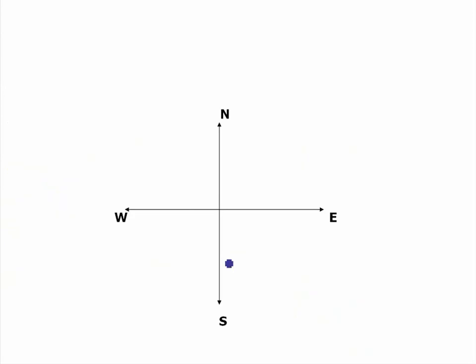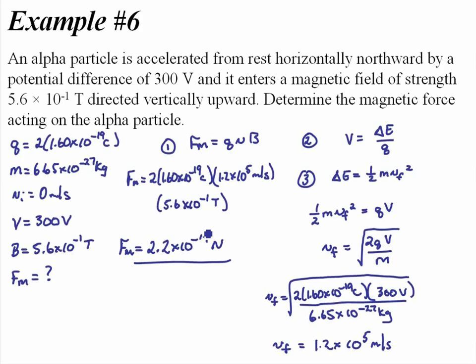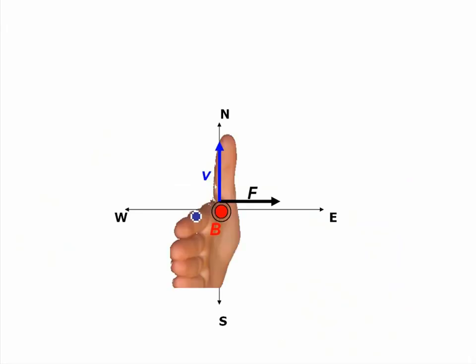What we're going to do now is try to determine the direction. So we go back to the picture. It's an alpha particle, so we use our right hand. It's accelerated northward, so that means our thumb points to the north, and the fingers come out of the page. Thumb to the north, fingers out of the page, that should tell us that the force in this question is to the east. So I'll write that force again, 2.2 times 10 to the negative 14 newtons to the east in this case.